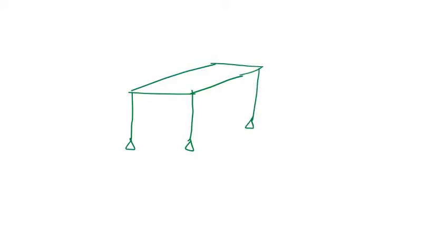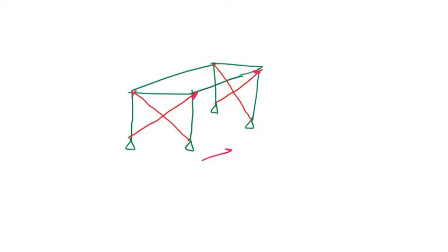So we have a portal frame in 3D like this. All the supports are pin supports, and that is why we have to use bracing. We also have another bracing, and we are using moment connections along this direction and this direction.